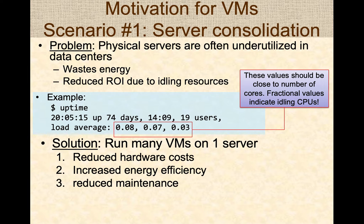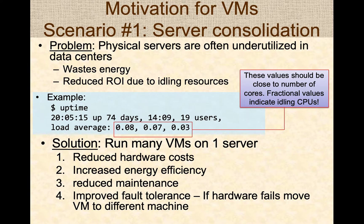You also have reduced maintenance: if you had eight users each with their own machine, you'd have to physically maintain eight different servers. But with virtual machines consolidated onto a single server, you maintain only one server. Additionally, virtual machines provide improved fault tolerance — when a VM is turned off, it is stored on disk. If a machine fails, you can copy those files to another server and start the virtual machine there. VMs can seamlessly move to other machines in a data center, enabling migration even when hardware fails.